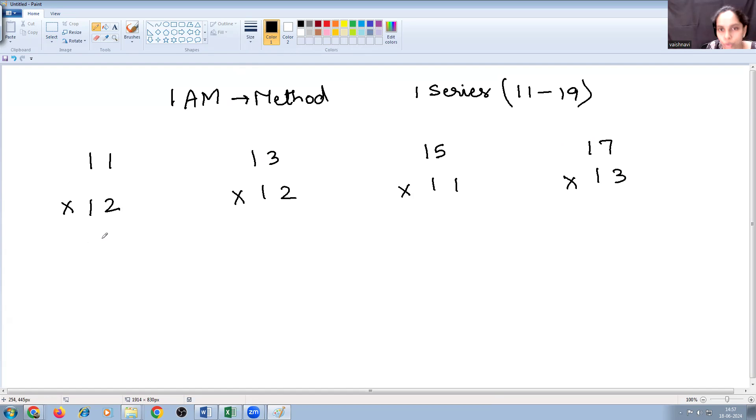So let us see how to go about with this. So here 1AM, A means addition, M means multiplication. So using these two functions, we are going to carry out these one series multiplications. So the answer here is going to have two parts, two parts.